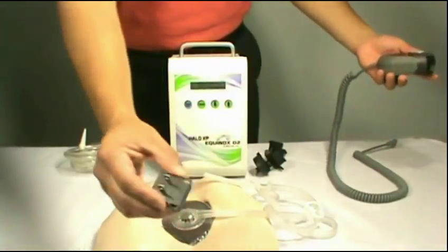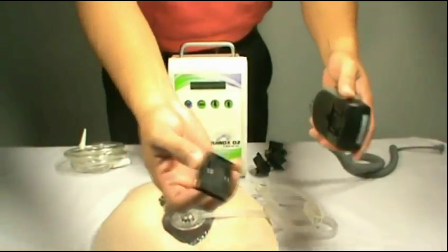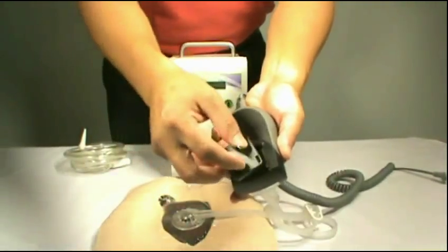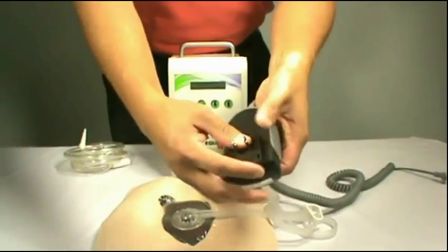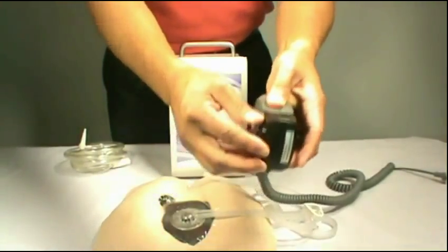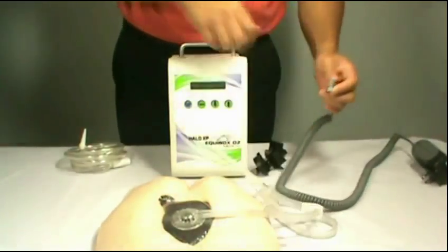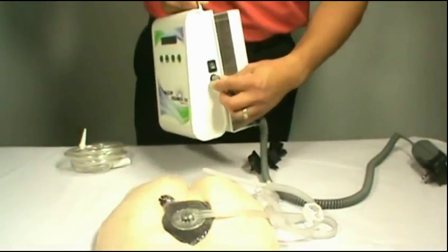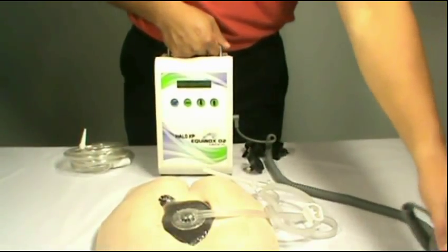Choose your appropriate power outlet adapter and connect it to your power adapter. You should also hear a snap on this one to signal or to let you know it is properly secured. Connect the power adapter to the Halo XP and connect your power adapter to any power source.